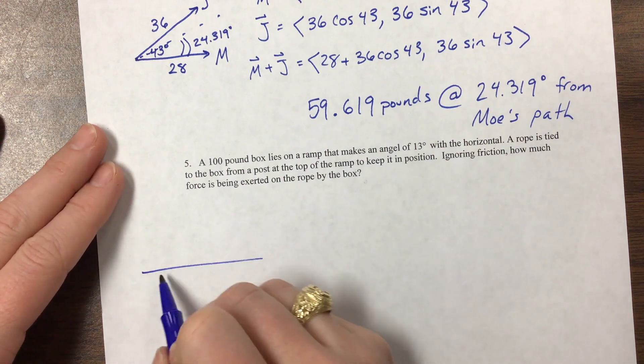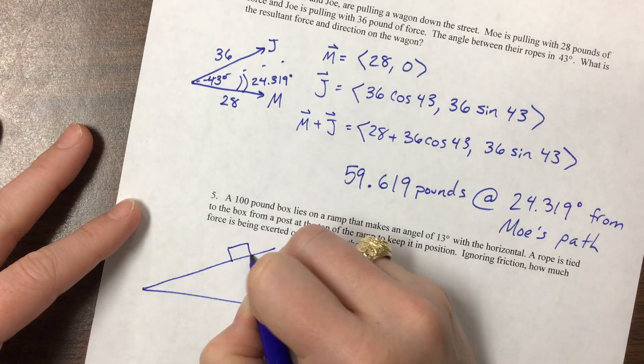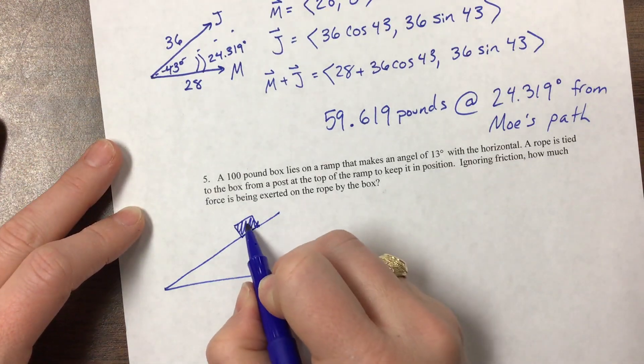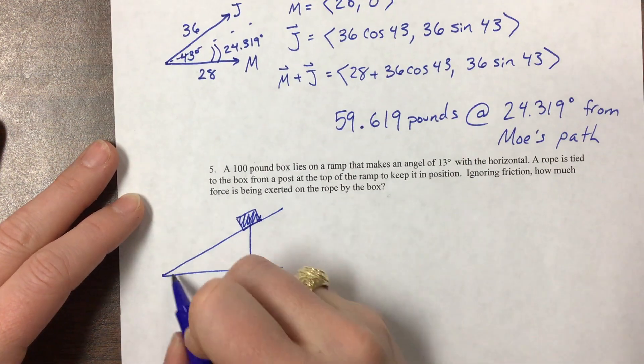Okay, so once again these are really tricky to do if you don't draw a picture. So here's a box and the hundred pounds is pulling it down this way, and this is a 13 degree angle.